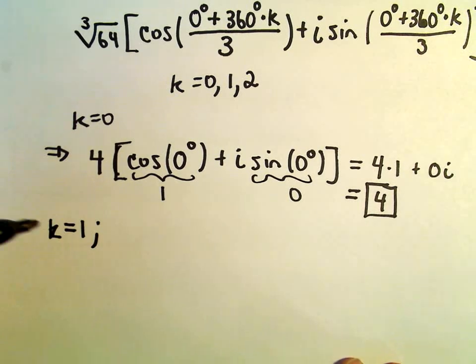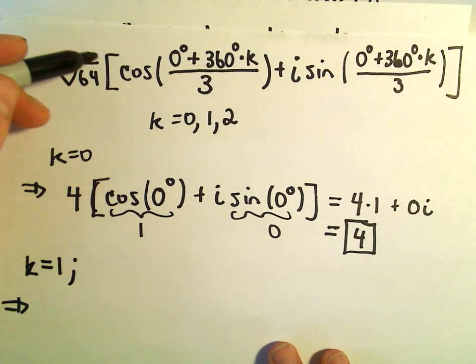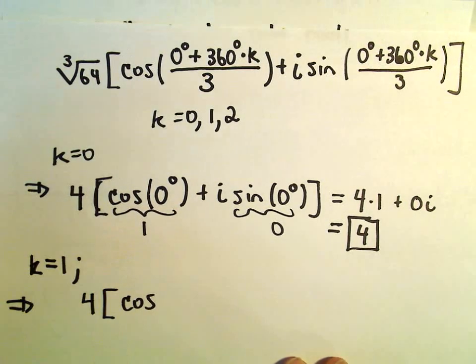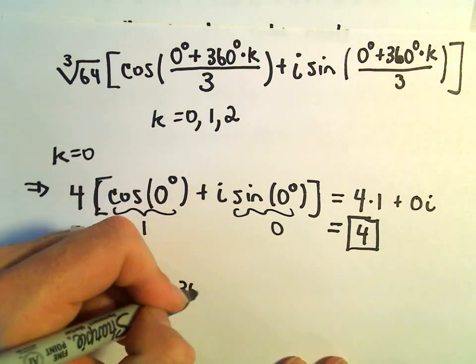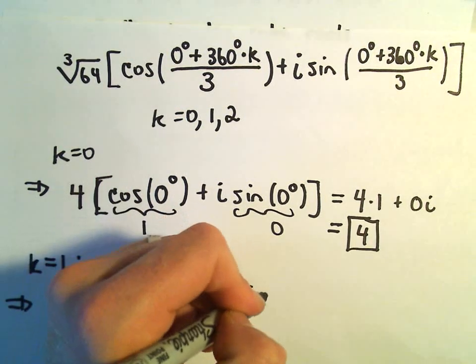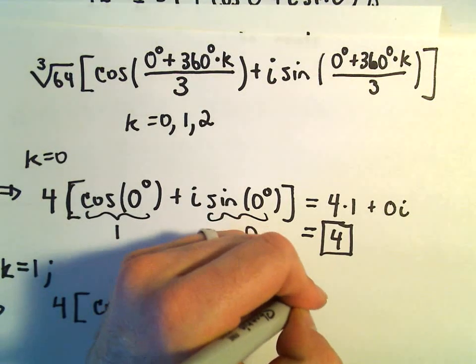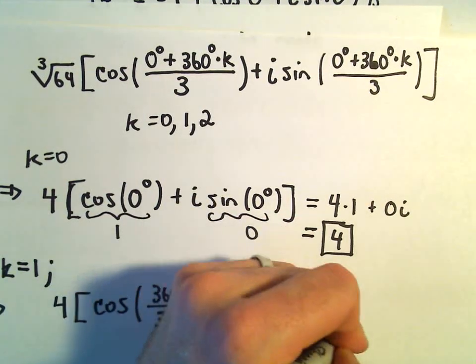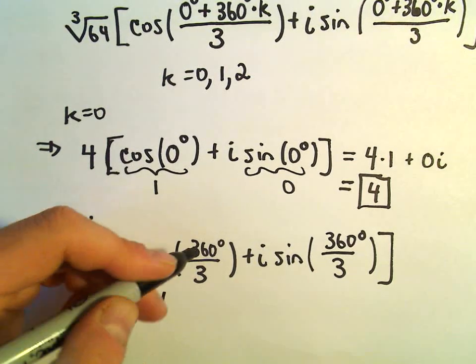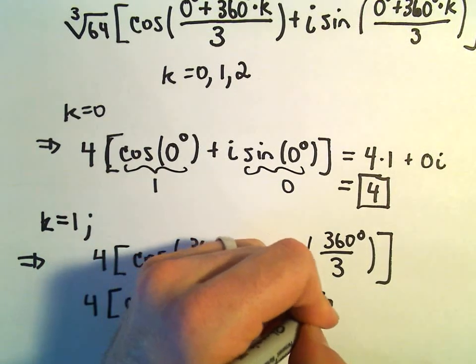Let's do k equals 1. So if we do k equals 1, so going back up here to our formula, it says we would have the cube root of 64, which is going to be 4. And then it says we would have cosine of 360 degrees. But that would be divided by 3, plus i sine. So when we plug in k equals 1, we'll just be left with 360 degrees. So it's 360 over 3. And I think we can simplify this up a little bit. So this will be cosine of 360 over 3, that'll be 120 degrees, plus i sine of 120 degrees.